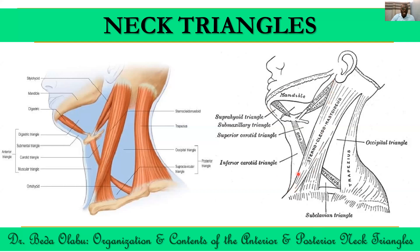For the anterior triangle, we use the anterior border of sternocleidomastoid, the inferior border of the mandible, and the midline of the neck. The anterior triangle is further divided into four smaller triangles based on the location of the omohyoid muscle superior belly, the digastric muscle — both anterior and posterior belly — as well as the stylohyoid muscle. Between the superior belly of omohyoid, the anterior border of sternocleidomastoid, and the midline, we have the muscular triangle. Between the superior belly of omohyoid, the anterior border of sternocleidomastoid, and the posterior belly of digastric together with the stylohyoid muscle, we have the carotid triangle.